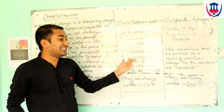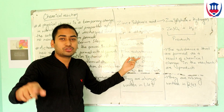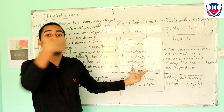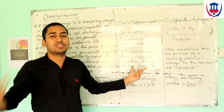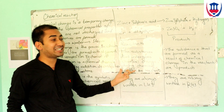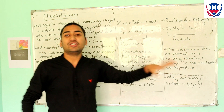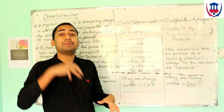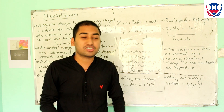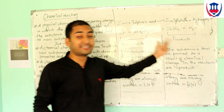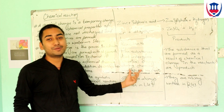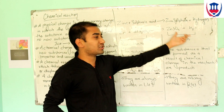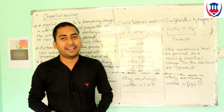So, the substances that undergo chemical change form new substances. Reactants are always written on the left-hand side, whereas the products are always written on the right-hand side.